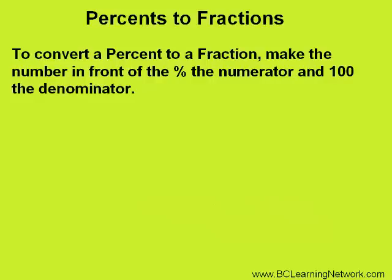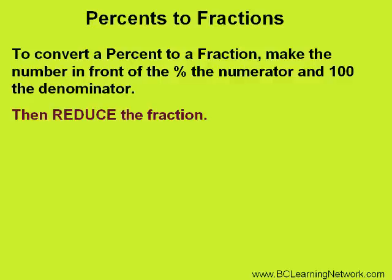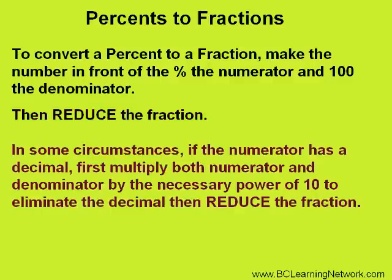Now, let's convert percents to fractions. Again, we will use the fact that percent means out of 100. So the number in front of the percent is our numerator, and 100 becomes the denominator. As with most fractions, we will want to reduce them to their lowest terms. For these examples, we'll reduce the fractions by finding the greatest common factor first. It would be highly recommended to review the concepts of finding the greatest common factor and reducing fractions to help you with this lesson. Also, in some circumstances the numerator may have a decimal, so we want to eliminate this by multiplying both the numerator and denominator by the necessary power of 10. Then we can carry on with reducing the fraction.